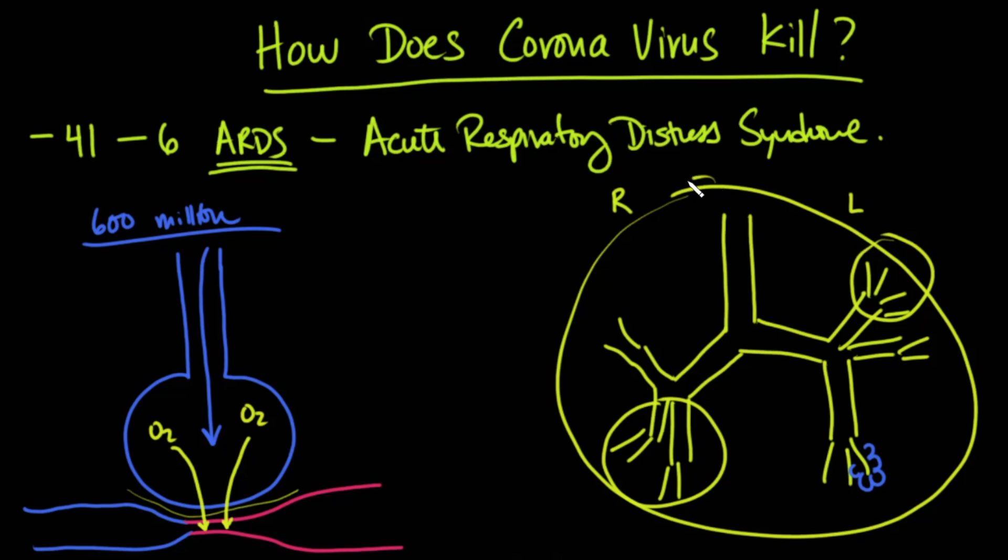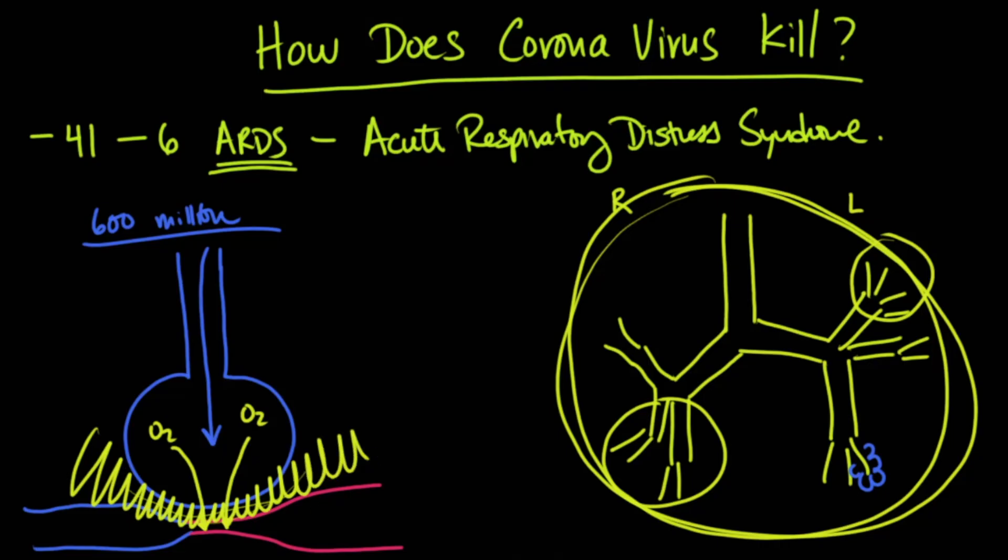No, with ARDS, the entire lung goes crazy with inflammation, and so what happens here, instead of having a nice thin area, inflammation goes everywhere, and you get a large barrier of fluid that goes into the interstitial space. Furthermore, these capillaries start to become leaky, and fluid starts to leak into the alveolar space as well, and this starts to fill up with liquid, proteinaceous liquid.